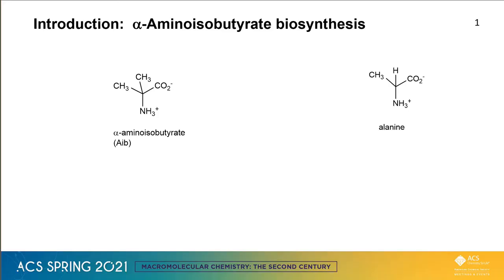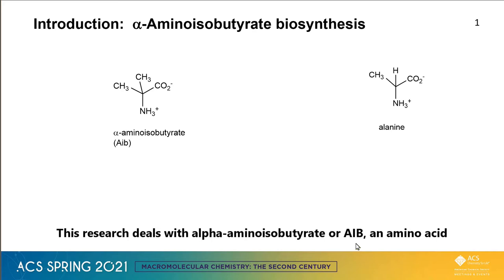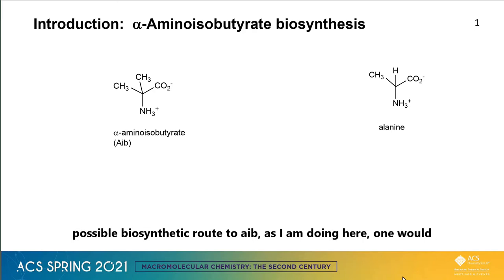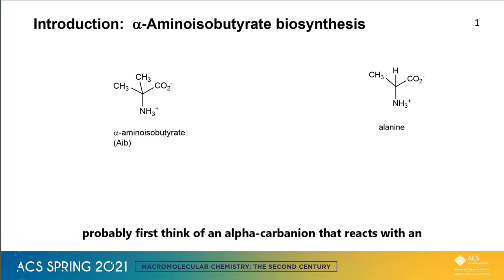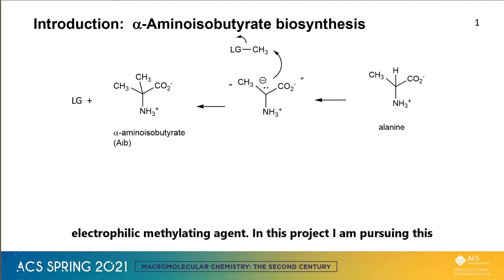This research deals with alpha-amino isobutyrate, or AIB, an amino acid with a methyl in place of the alpha hydrogen of alanine. In guessing a possible biosynthetic route to this AIB, as I am doing here, one would probably first think of an alpha carbanion that reacts with an electrophilic methylating agent.